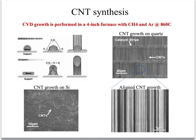VLS means vapor-liquid-solid growth. The carbon source molecules are in vapor form, they dissolve in the liquid-phase catalyst, because the furnace is at a very high temperature, usually around 800–900 degrees Celsius. Then the carbon atoms will supersaturate to form the nanotubes in solid phase.